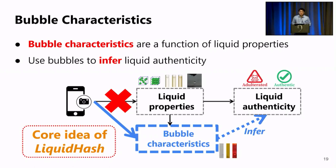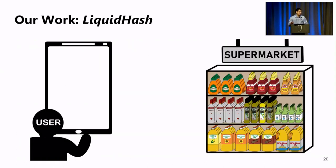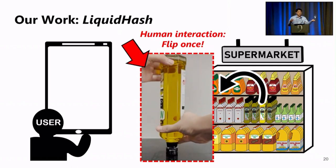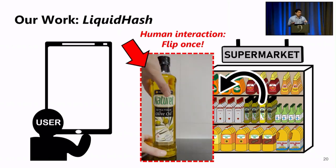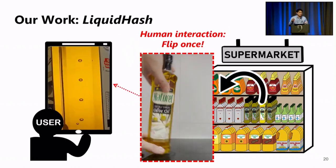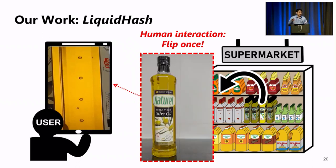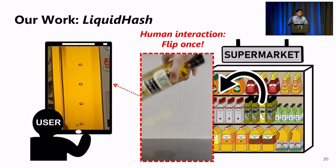However, the bubbles will not magically appear if we do nothing to them. To induce the bubbles, we actually do a simple human interaction by simply flipping the bottle, like this. And then we use the slow motion camera to capture the bubbles in a slower and nicer view, just like this.